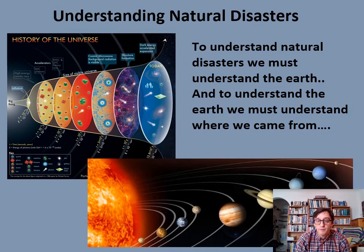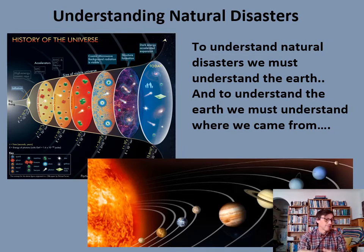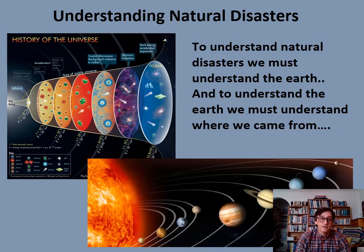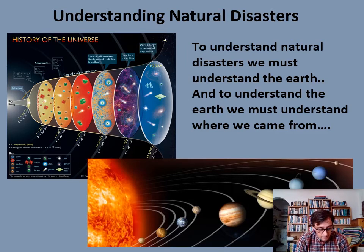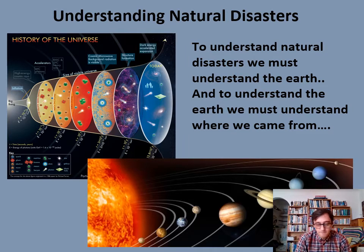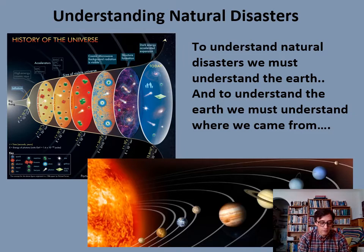Next week we're looking at impacts, but also the solar system. To understand natural disasters, we have to understand the earth, and from the earth we have to understand the universe — astronomy. The universe has been around about 13.8 billion years since the Big Bang, and it's been an expanding universe ever since. The age of our solar system and specifically the earth is around about 4.54 billion years old — or 4,540 million years.